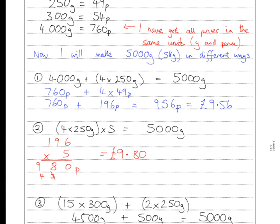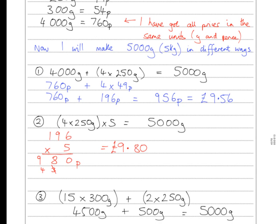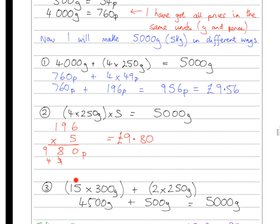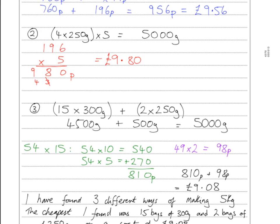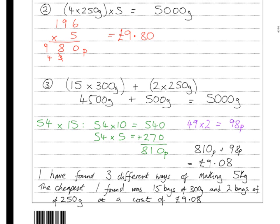My third option — I hadn't used the 300-gram bags yet. The maximum number of 300-gram bags that fit into 5,000 g would be 16, giving 4,800 g, but I had no denomination that fits exactly into the remaining 200 g. So I worked backwards and used 15 bags of 300 g, giving 4,500 g, then 2 bags of 250 g giving 500 g, totalling exactly 5,000 g. Then 54p times 15: I partitioned into 10 and 5, giving 540p and 270p — wait, 54 times 10 is 540 and half of that is 270, so 810p — plus 2 times 49p is 98p, coming to a total of £9.08. That was the cheapest option I could find.